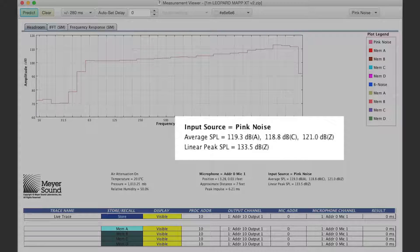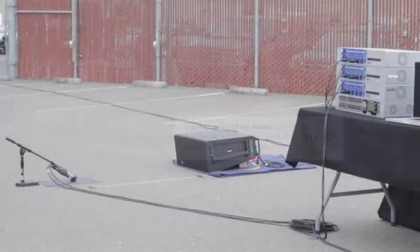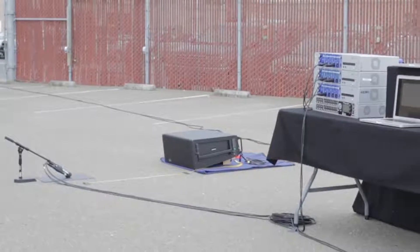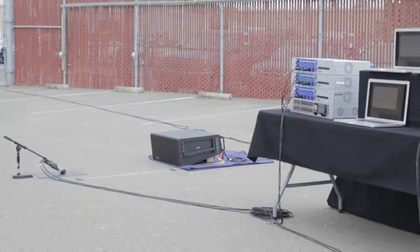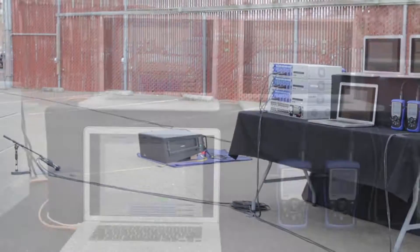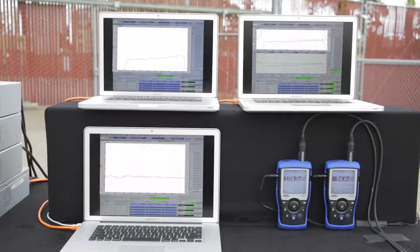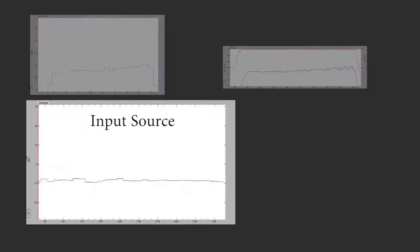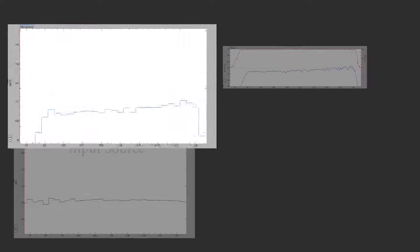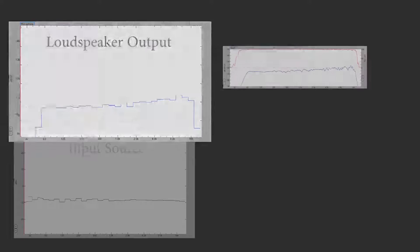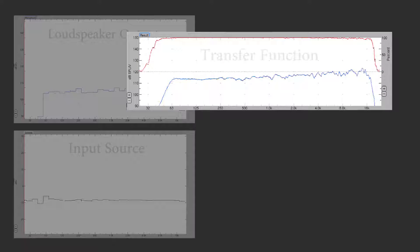To replicate the MAP model, place a Leopard loudspeaker on the ground in an open area. Place a measurement microphone one meter away from the loudspeaker. The input source is measured here. The loudspeaker output is measured here. And this is the transfer function.